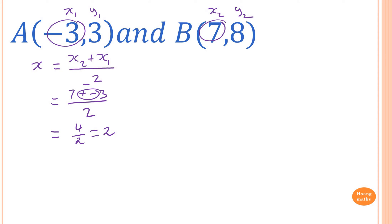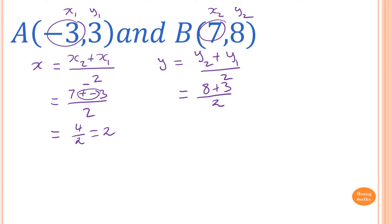For the y value: y = (y2 + y1) / 2 = (8 + 3) / 2 = 11 / 2 = 5.5, or 5 and a half. So the midpoint M is (2, 5.5).